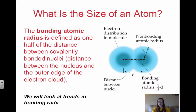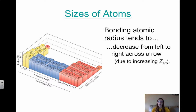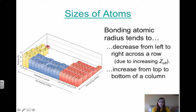Atomic radius can be influenced by nuclear pull and the number of energy levels. Nuclear pull is essentially effective nuclear charge. When it comes to sizes of atoms, the bonding atomic radius tends to decrease from left to right across a row — it gets smaller — and this is due to effective nuclear charge. It increases from top to bottom, and this is due to increasing value of n.